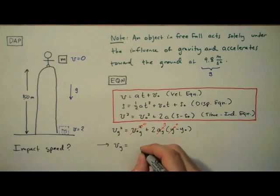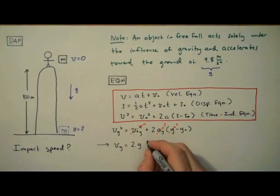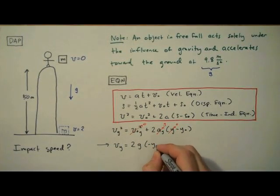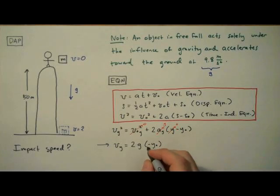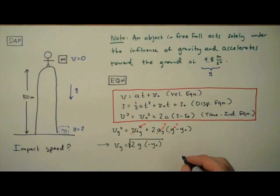Vy is equal to 2 times g times negative y0. Don't forget that negative sign. And since vy was squared, we're going to take the square root of this side of the equation. And we're done. We just have to plug in our initial values.